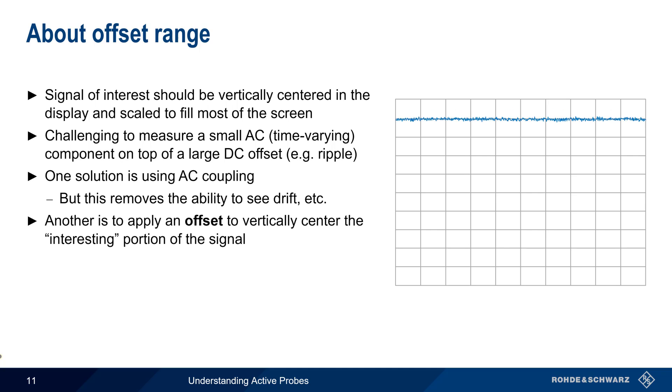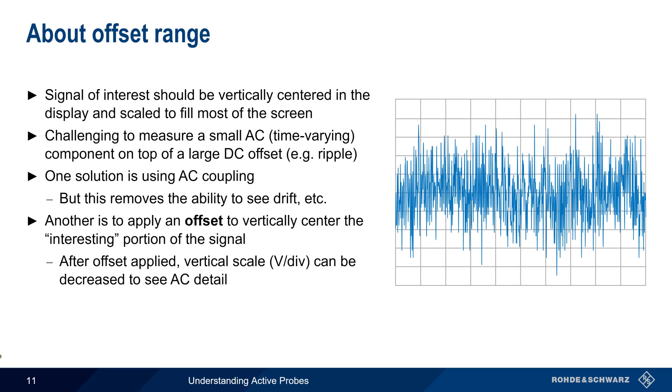Another approach is to apply an offset to the channel so as to vertically center the signal. After this offset has been applied and the signal has been moved to the center of the display, the volts per division setting can be decreased to see the AC component of the signal in more detail.